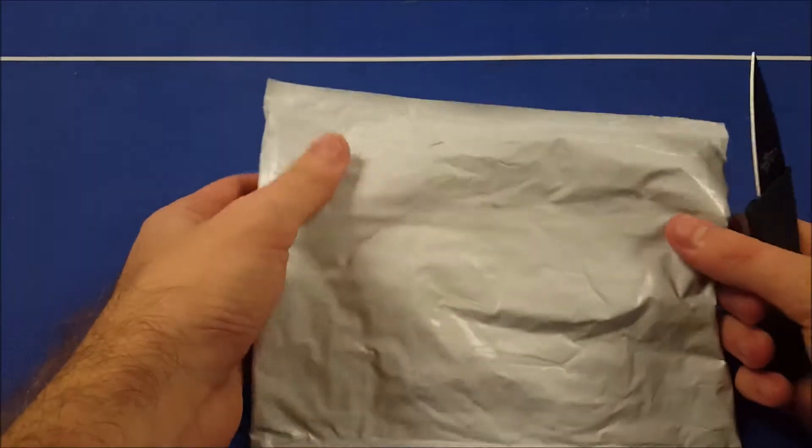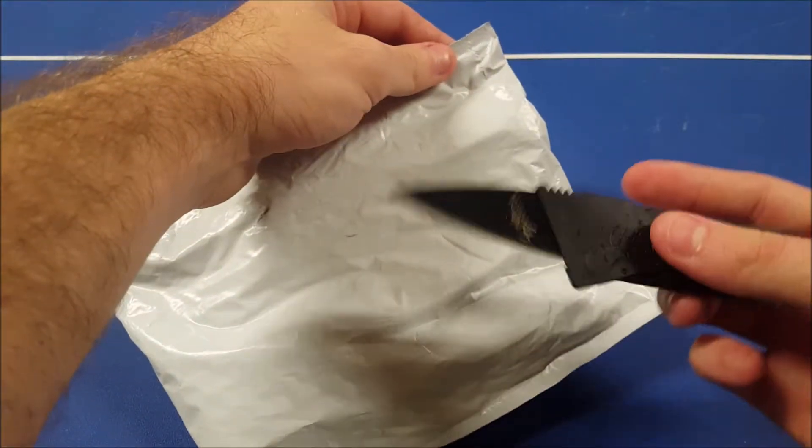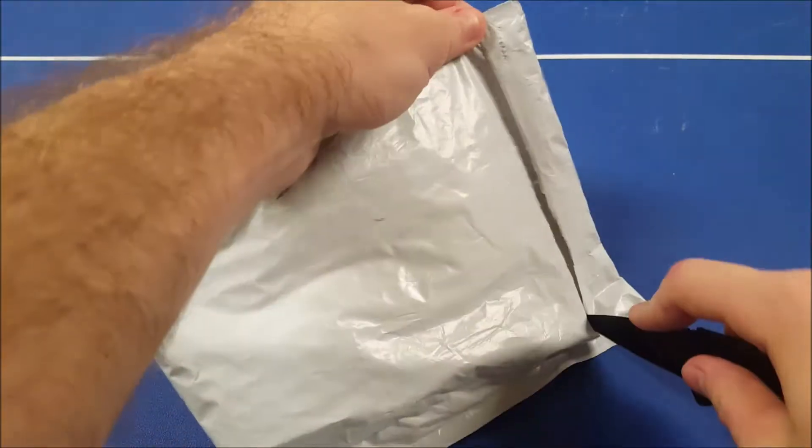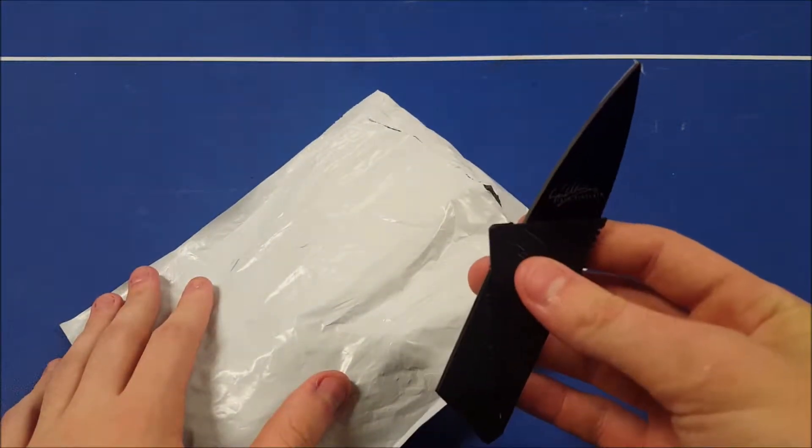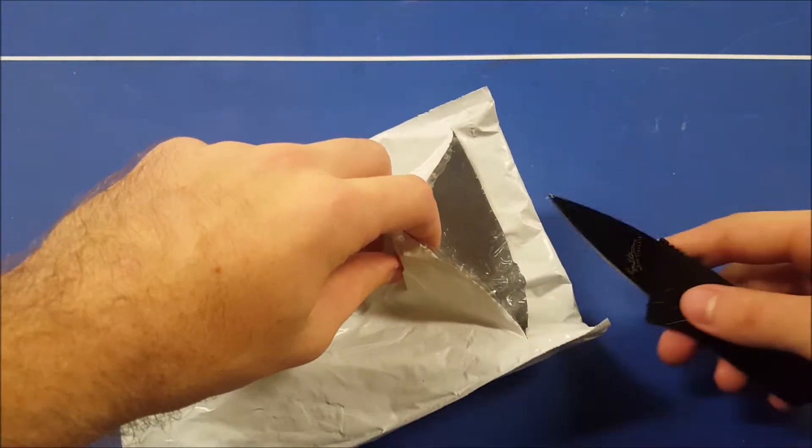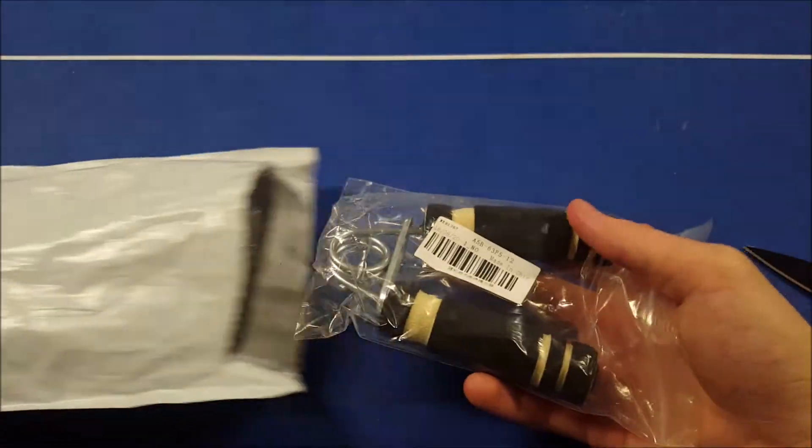Alright guys, so it comes in your standard bubble wrap eBay packaging. We're going to use our $1 knife, that is a credit card knife, to open this thing up. If you want to check out that video, there's a link right there to it. Alright, so that cut that thing open nicely. Razor sharp.